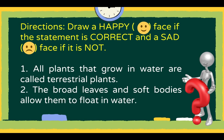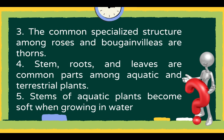Draw a happy face if the statement is correct, and a sad face if it is not. Number 1: All plants that grow in water are called terrestrial plants. Number 2: Broad leaves and soft bodies allow plants to float in water. Number 3: A common specialized structure among roses and bougainvillea are thorns. Number 4: Stems, roots, and leaves are common parts among aquatic and terrestrial plants. Number 5: Stems of aquatic plants become soft when growing in water.